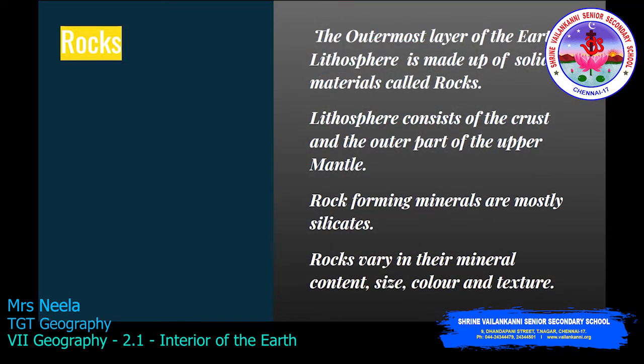In the previous video we saw about the layers of the earth, in which we saw the outermost layer — the lithosphere — in detail. It consists of the crust and the outer part of the upper mantle. This lithosphere is made up of solid materials called rocks. Rock-forming minerals are mostly silicates. Rocks vary in their mineral content, size, color, and texture.